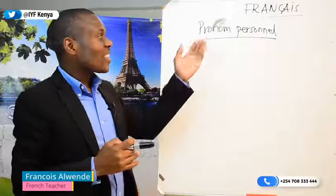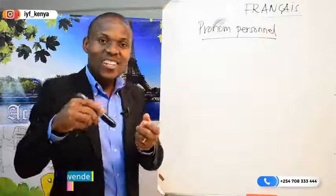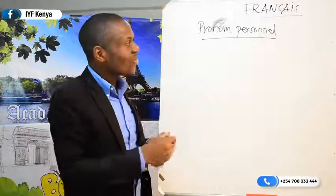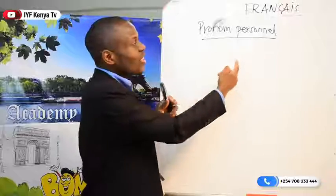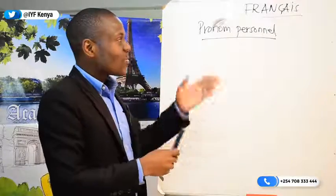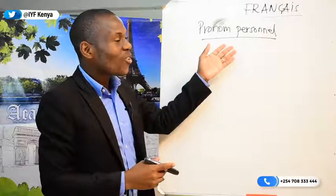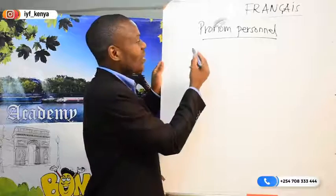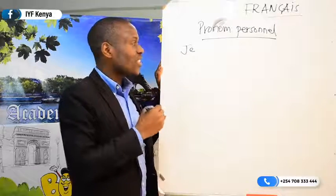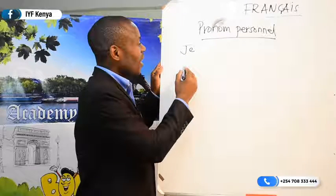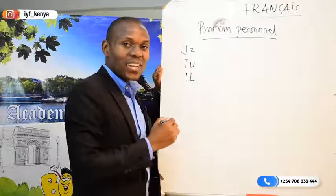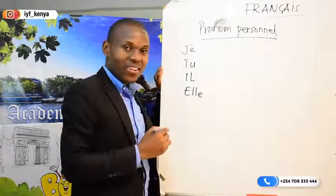As we agreed, I will be writing the French here and you just write the English in your notebook. So this is the 'pronom personnel.' In English it's just the personal pronoun — the spelling is almost the same. In this pronom personnel, there is: je — written j-e — then tu, after tu we have il, then elle.